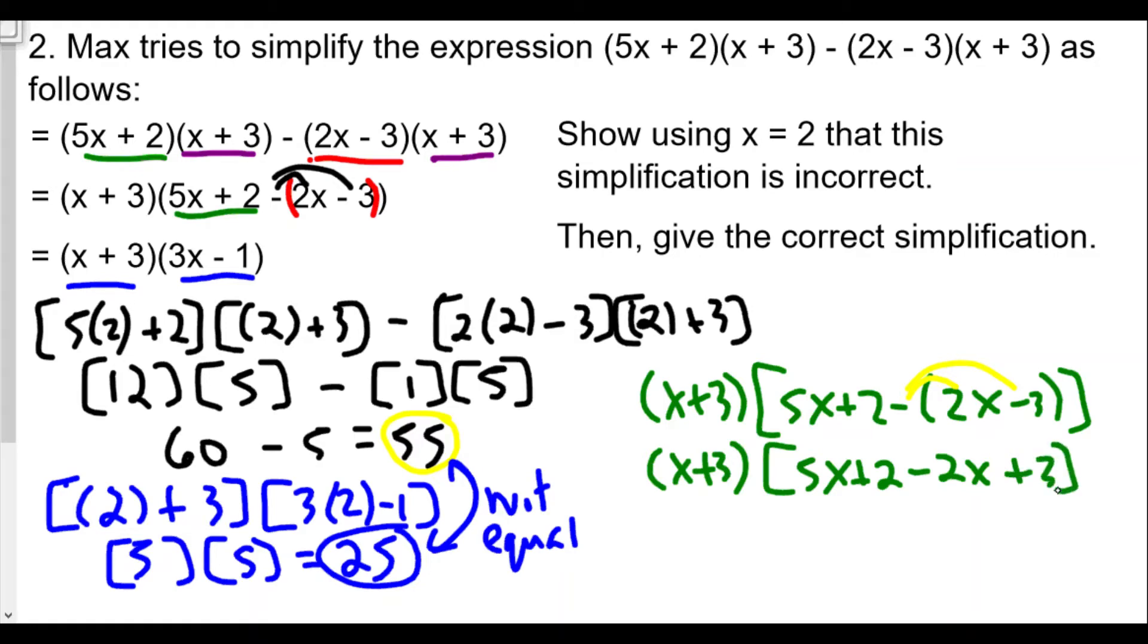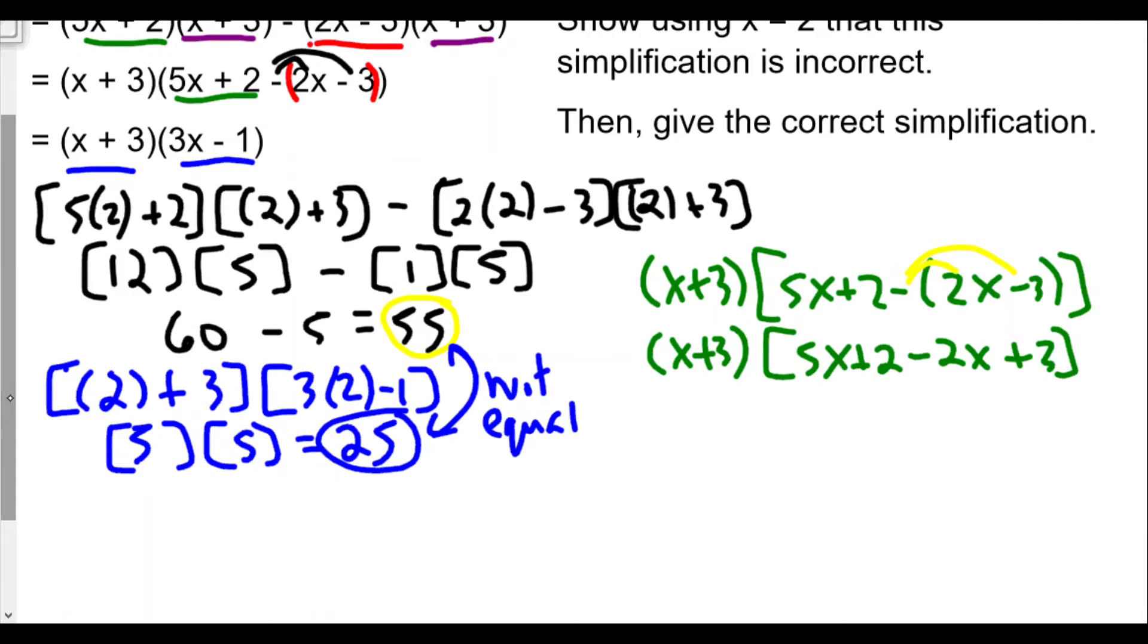So when we simplify this, we're going to get 5x minus 2x, or 3x, which is what the other person got, right? Max got, but 2 plus 3 is plus 5.